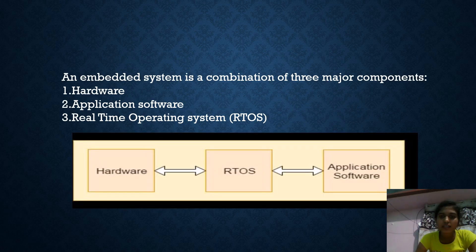Next, we can see the three major components in an embedded system. One is hardware, and the others are application software and real-time operating system. Let us see what is meant by hardware.